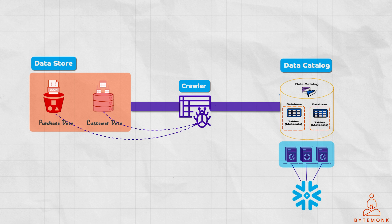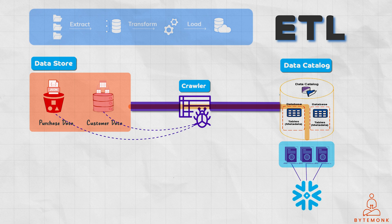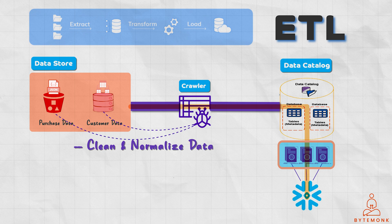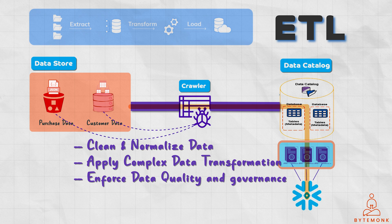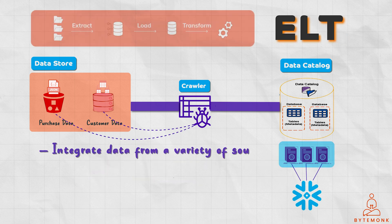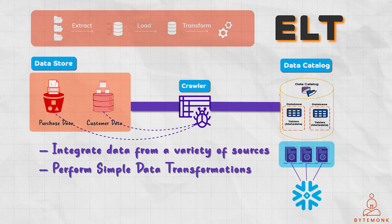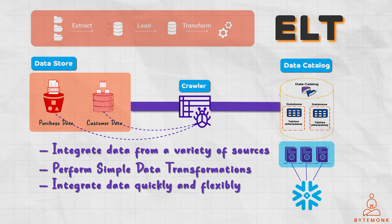AWS Glue is a serverless data integration service that supports both ETL and ELT workflows. In ETL mode, AWS Glue extracts data from source systems, transforms it using Apache Spark, and loads it into target systems such as Amazon S3, Amazon Redshift, or Amazon DynamoDB. You would use ETL mode when you need to clean and normalize data from multiple sources before loading it into a data warehouse, apply complex data transformation rules such as aggregating data or generating new features, and enforce data quality and governance rules such as ensuring consistent formatting or restricting certain values. In ELT mode, you need to integrate data from a variety of sources including cloud data lakes and data warehouses, perform simple data transformations such as filtering or converting data types, and integrate data quickly and flexibly so that you can start analyzing it sooner.